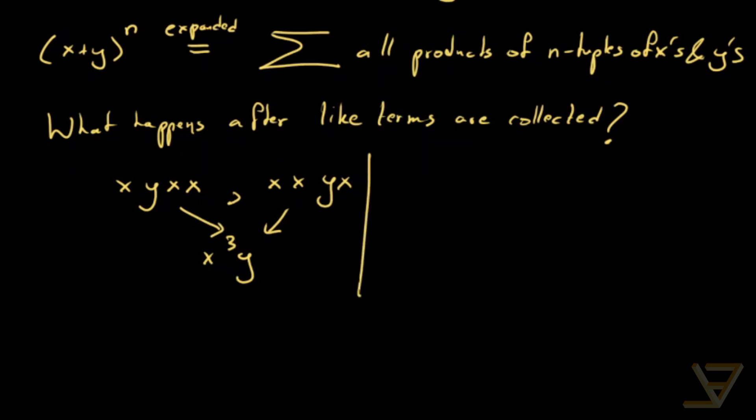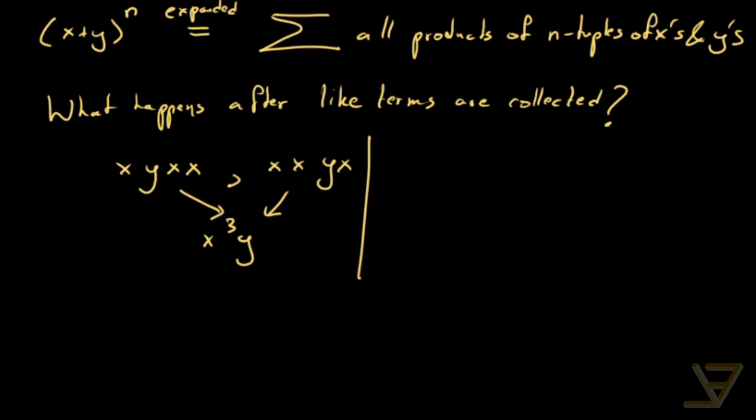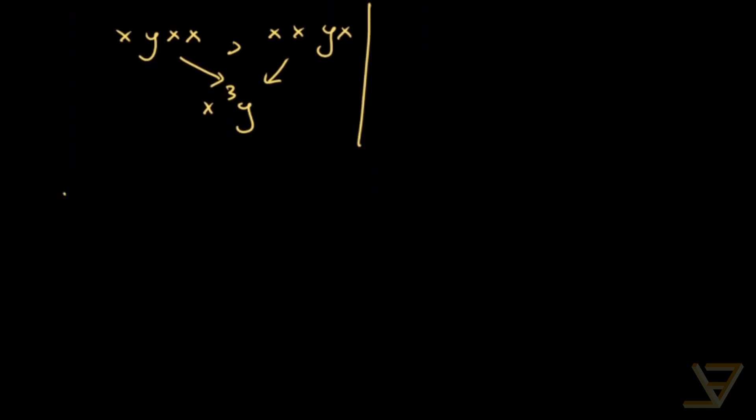So the terms look like this. We have x to the power of n. We have x to the power of n minus 1 y. We have x to the power of n minus 2 y squared. And we keep going like this until we have y to the power of n.